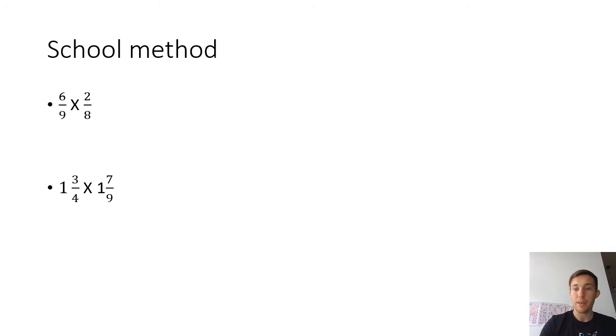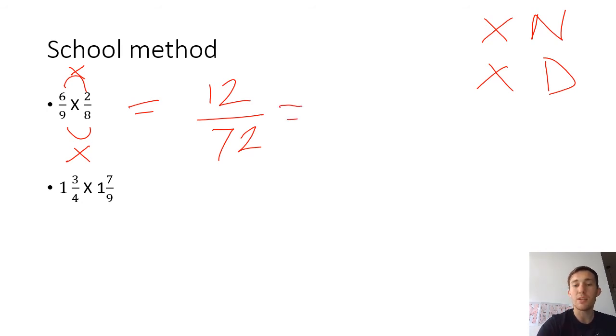So now I'm going to quickly show you the school method that we used in school after we practice and practice and practice that area model so that you had a really secure understanding. So our quick, easy method is to just multiply the numerators and multiply the denominators. So in this question, I've got here six ninths multiplied by two eighths. I need to multiply the numerators. Six times two is 12. And I multiply the denominators. So nine times eight is 72. So therefore, six ninths multiplied by two eighths is 12 seventy-twos. However, this can be simplified because 72 is in the 12 times table. So we could simplify this to one sixth. Because 12 divided by 12 is one and 72 divided by 12 is six.